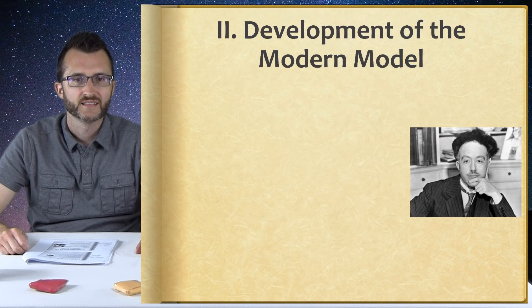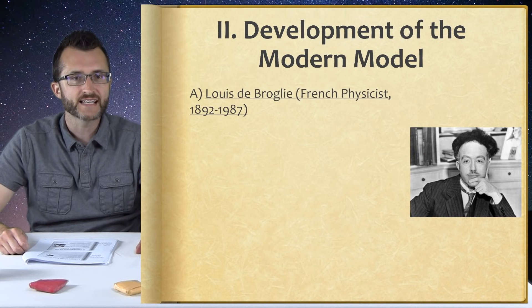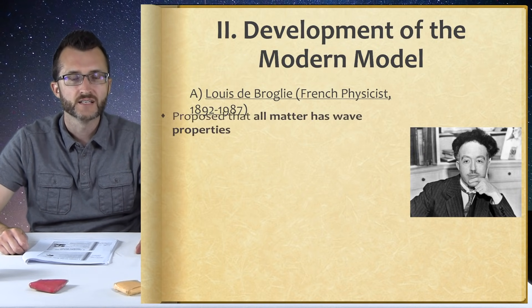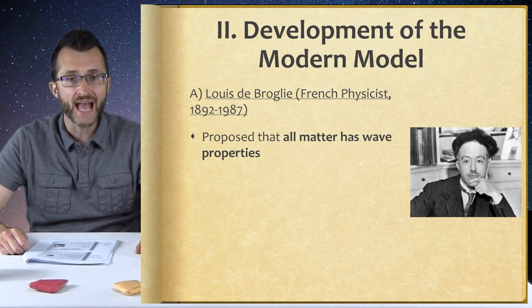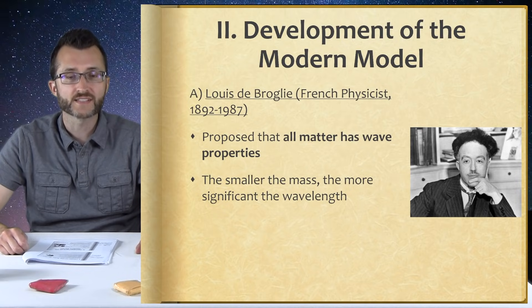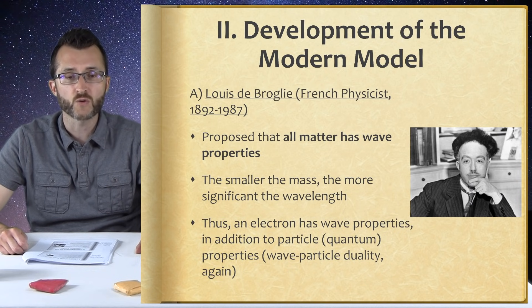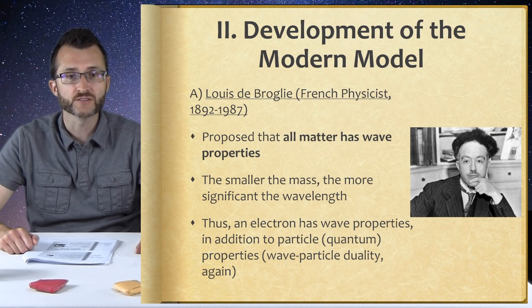If light can behave as both a wave and a particle, why can't an electron? Development of the modern model: Louis de Broglie, French physicist, 1892–1987. De Broglie proposed that all matter has wave properties — so even you and I, as objects, as matter, have wave properties. The smaller the mass, the more significant the wavelength. But because we're made of so much matter and we're so large, our waves are undetectable. Thus, an electron has wave properties in addition to particle or quantum properties — wave-particle duality again.